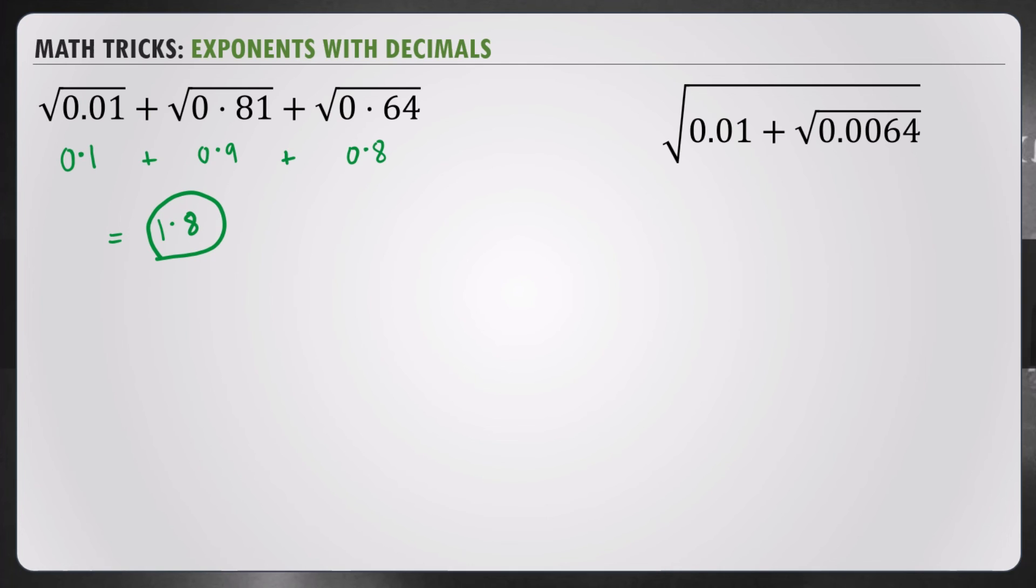Next, we have square root of 0.01 plus 0.0064. Okay. First, let's solve this number and then work it out with this. So, let's put that under the square root 0.01 plus, let's solve square root of 64 is 8. And there are 1, 2, 3, 4 places. So, that means we need 2 decimal places. So, that will be 0.08 as your answer. And 0.08 plus 0.01 equals 0.09. The square root of 9 is 3. We have 2 decimal places. Divide by 2. We need 1 decimal place. So, the answer is 0.3.